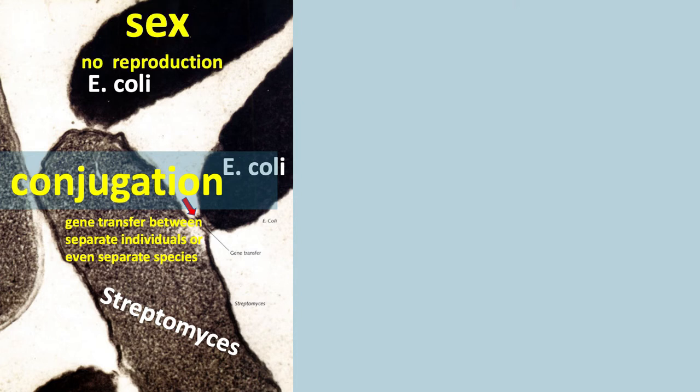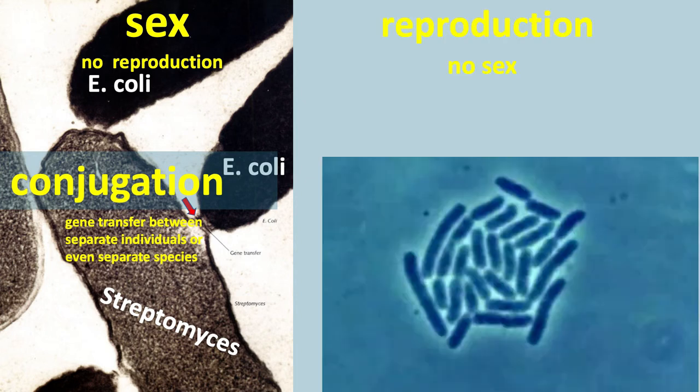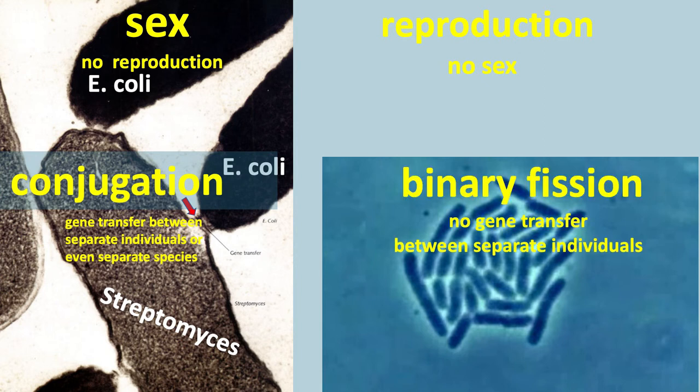On the left we have sex — gene exchange — but no reproduction; things are not being duplicated, just genes being swapped. On the right we have reproduction with no sex — that's the binary fission we saw, where no genes were transferred between separate individuals. So in bacteria, sex and reproduction are truly separate things.